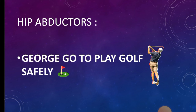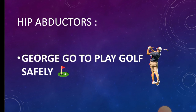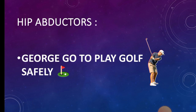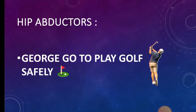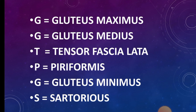Moving towards hip abductors. The mnemonic for hip abductors is 'George, go to play golf safely.' G for gluteus maximus, G for gluteus medius, T for tensor fasciae latae, P for piriformis, G for gluteus minimus, and S for sartorius.